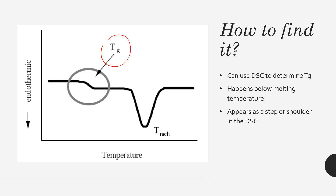We use a DSC — just like we used in the last rotation to find melting temperatures for alloys — to determine the Tg of a polymer. The way we identify where the Tg is on a DSC curve is by looking for a step or shoulder in the signal. For example, you can see a small step here — that's the transition temperature at which the polymer goes from glassy to more rubbery, and it occurs below the melting temperature.